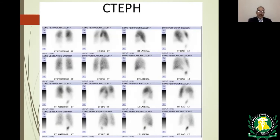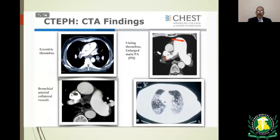Once the VQ scan is abnormal, the next test is CT angiography to confirm and assess the extent of pulmonary embolism and establish the chronic nature of the process. CT findings in chronic pulmonary embolism include eccentric thrombus, possible calcification, web formation, mosaic appearance of the pulmonary parenchyma, and enlarged bronchial arteries.